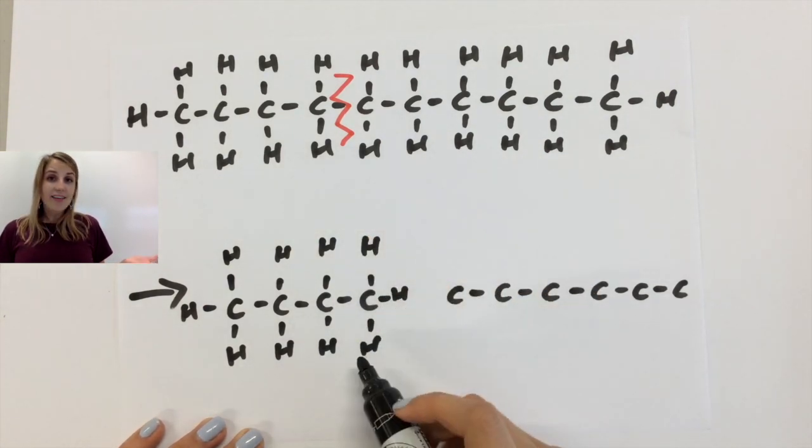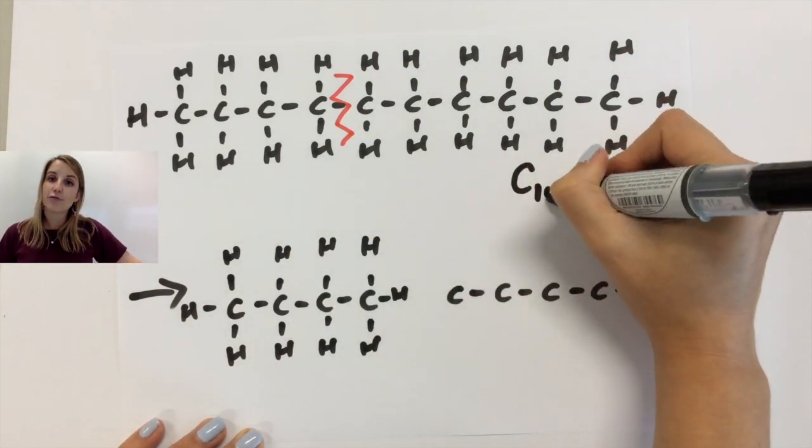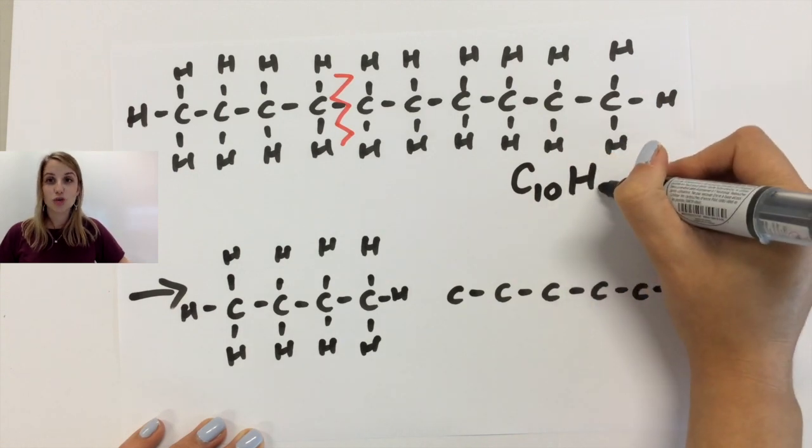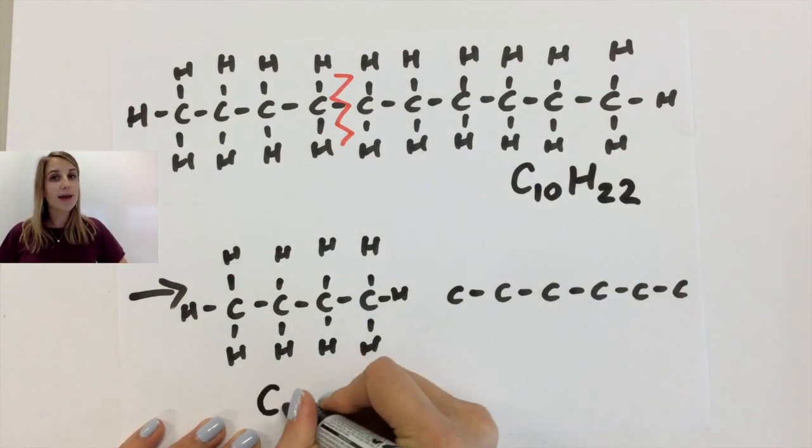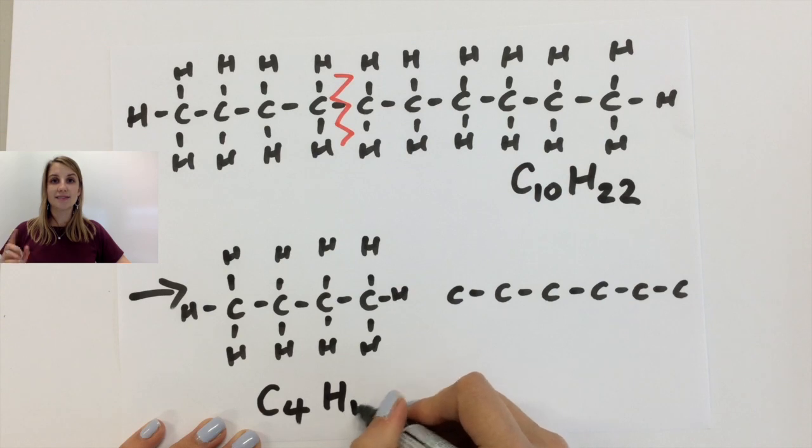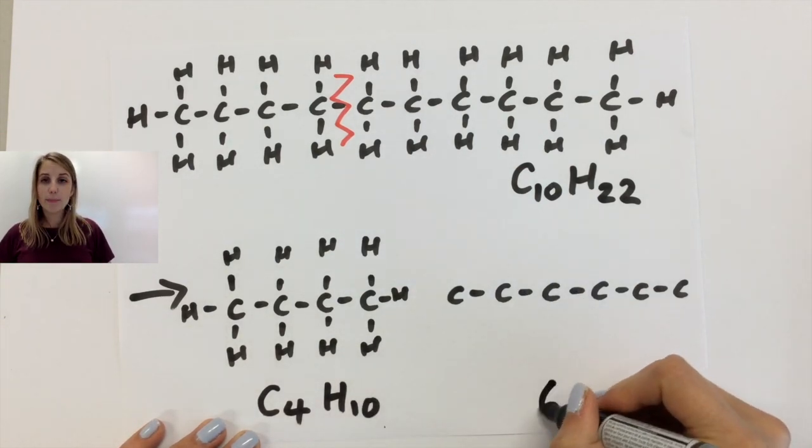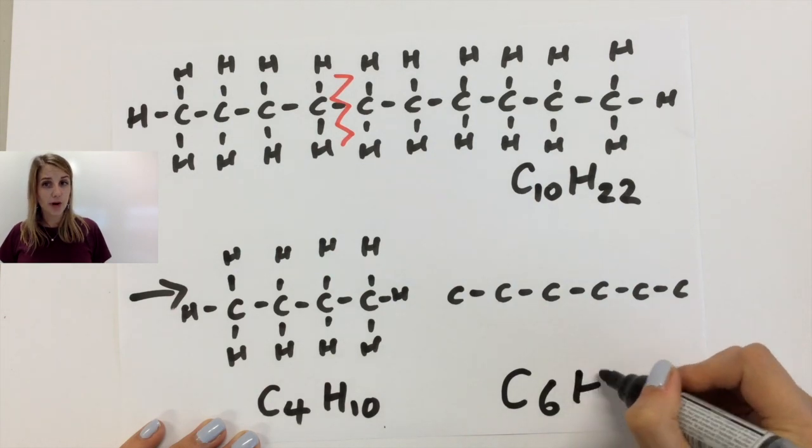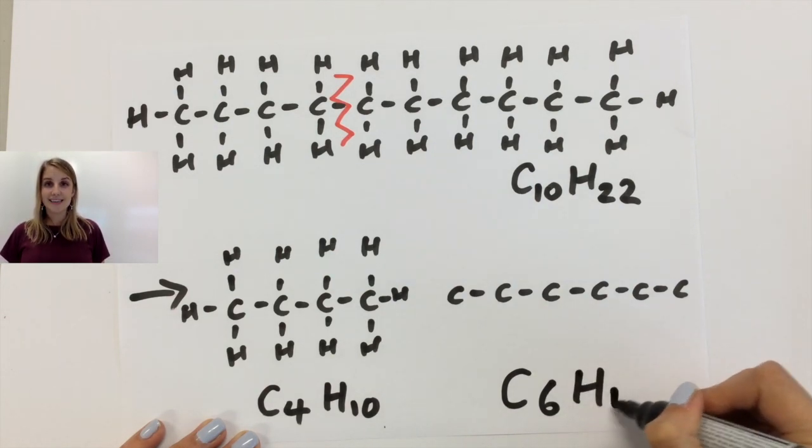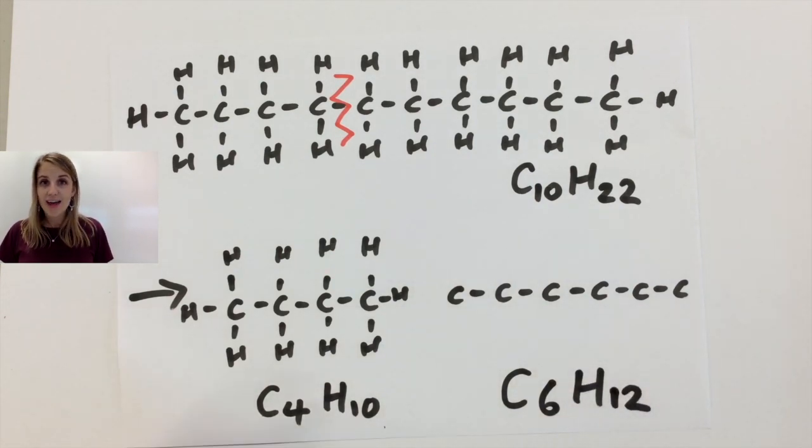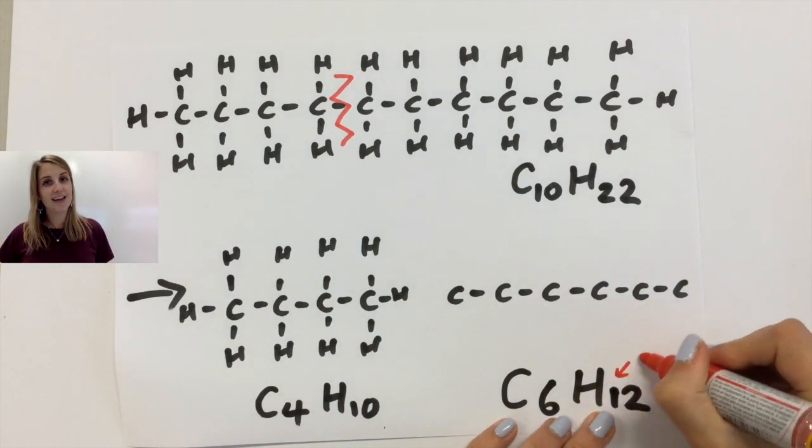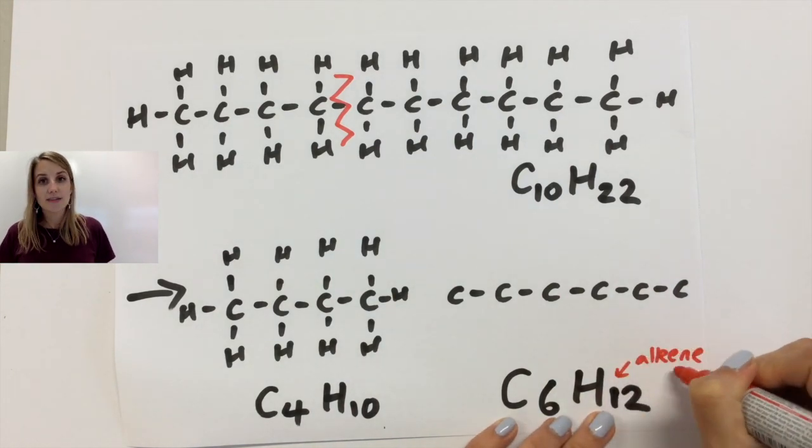Now the alkane I started with has the formula C10H22 and I've already made butane which has the formula C4H10. So if I balance that out that means that the formula of my other product must be C6H12. Now that means it's definitely an alkene because it's got the formula CnH2n. There's double the amount of hydrogens as carbons.